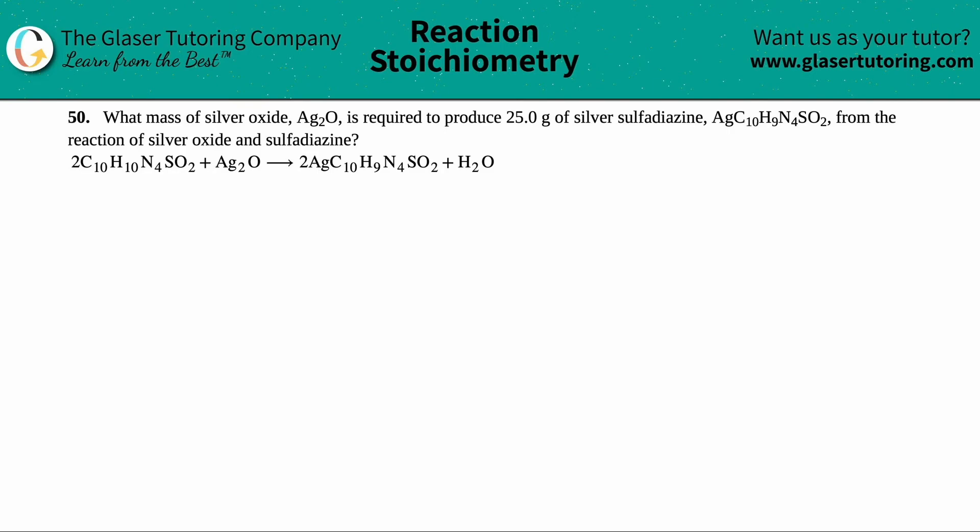Number 50. What mass of silver oxide, which is Ag₂O, is required to produce 25.0 grams of silver sulfadiazine, which is AgC₁₀H₉N₄SO₂, from the reaction of silver oxide and sulfadiazine? We have 2C₁₀H₁₀N₄SO₂ plus the silver oxide Ag₂O, and that's going to yield 2AgC₁₀H₉N₄SO₂ plus water.